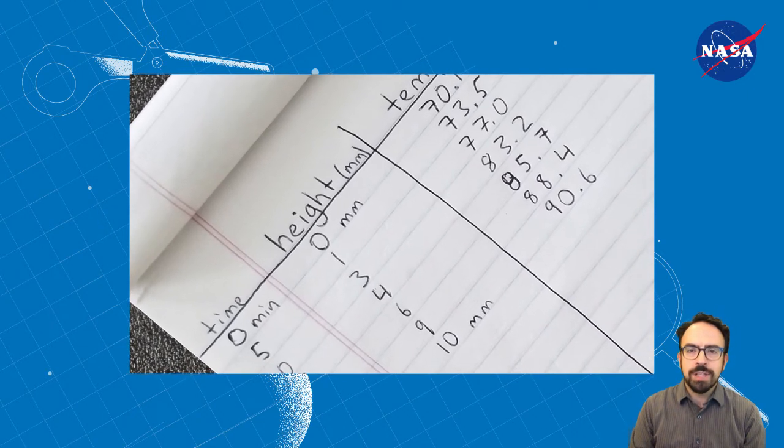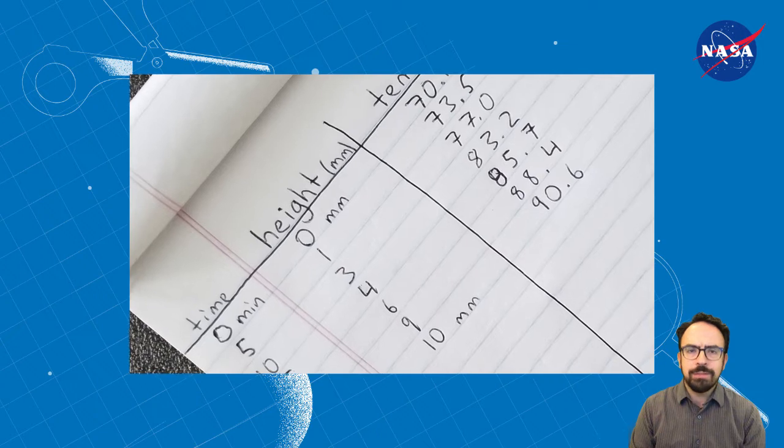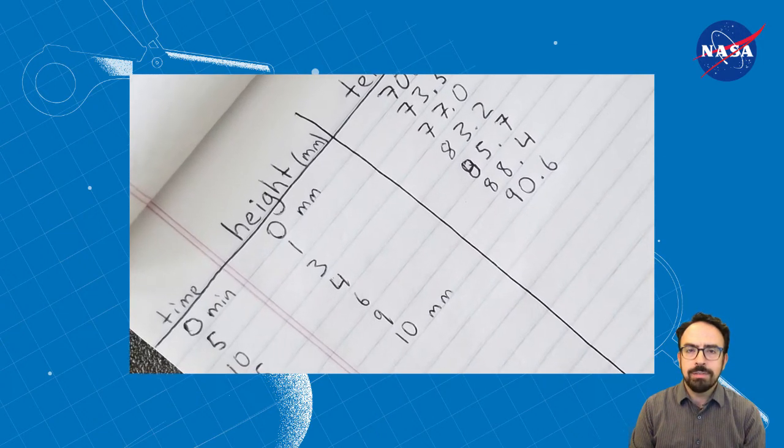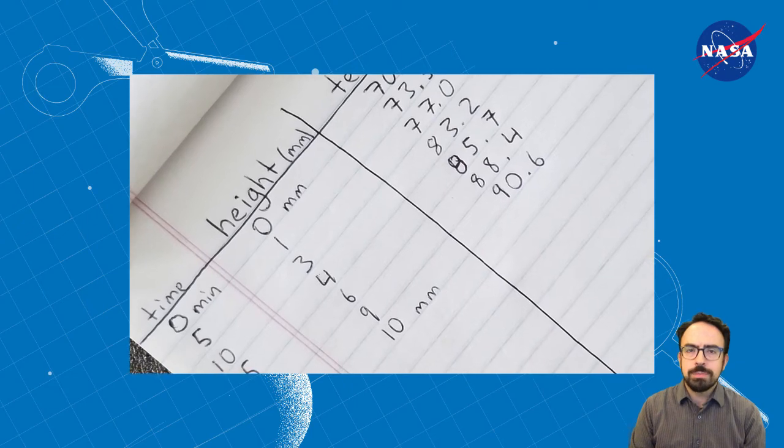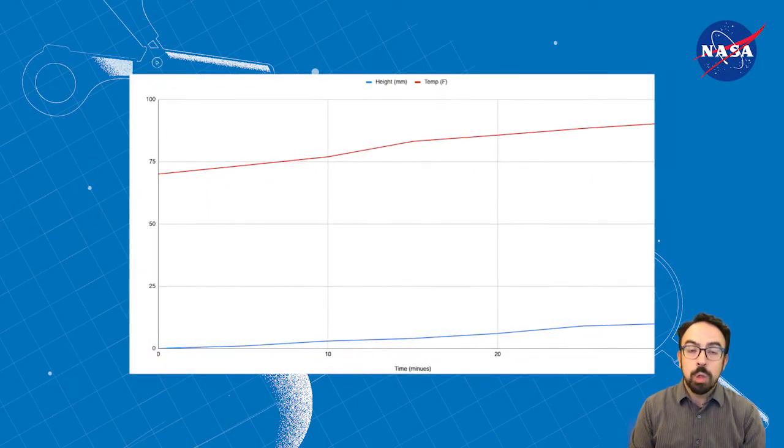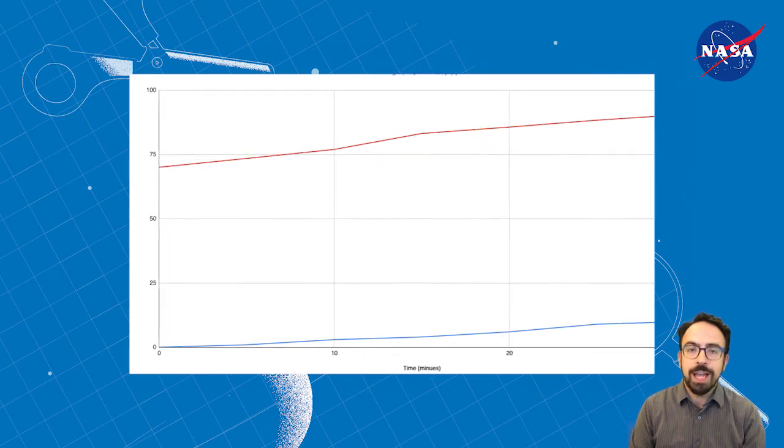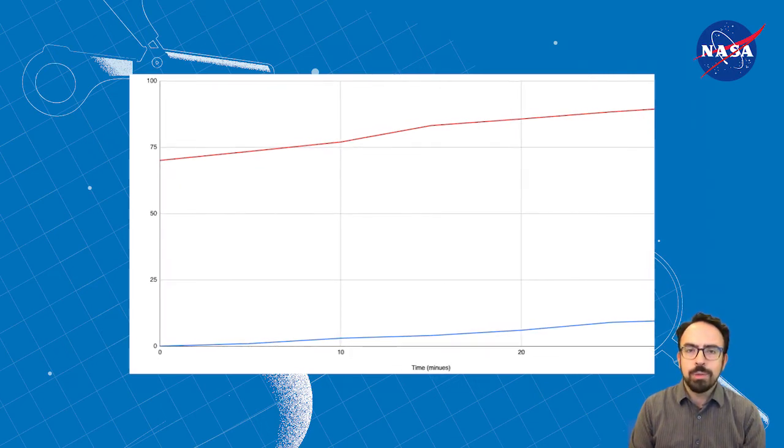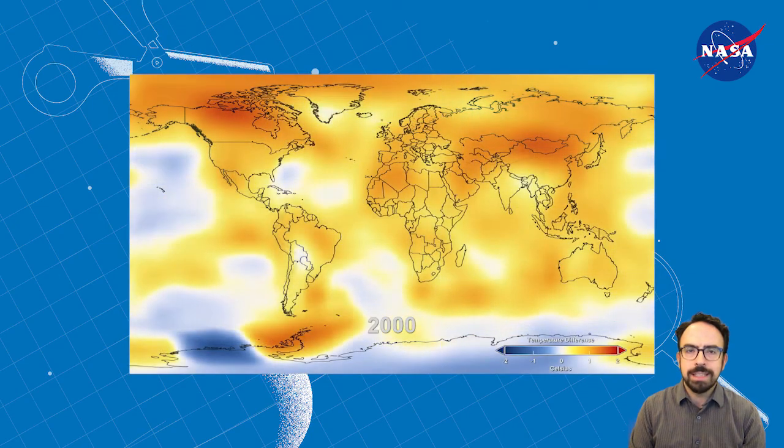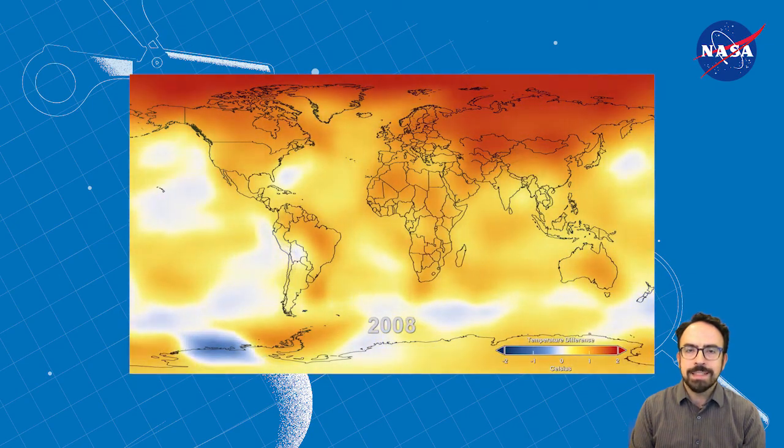There's no specific amount of time to observe and record, but after you've collected enough data to notice a pattern or trend in the water level and temperature, write a description of what you observe in the straw. Graph your measurements on paper, or using spreadsheet software if you have any. Think about what happened to the water level as heat energy was added, and think about how this relates to increasing global temperatures and sea level rise.